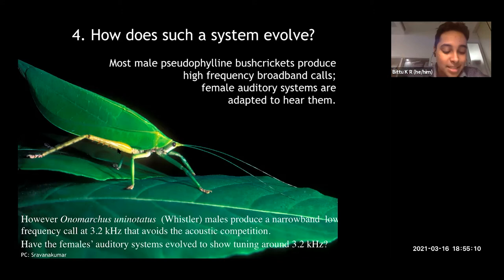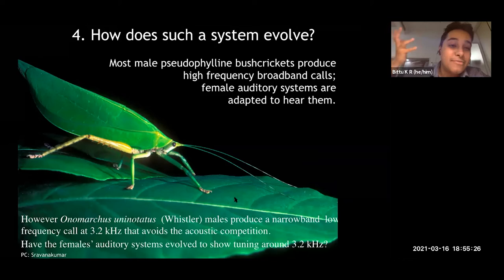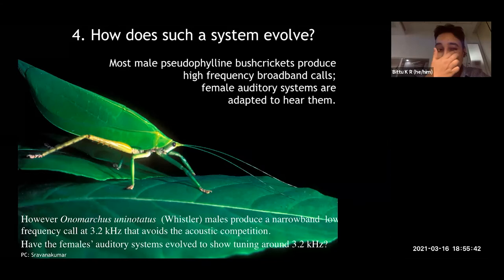Our interest was in looking at the hearing system because there was a hunch that if this is an animal listening to low-frequency sounds but has evolved from a high-frequency lineage, there might be interesting adaptations to examine — how the auditory system has evolved in concert with the call production system. These animals produce a narrowband, low-frequency call — such a low frequency that it actually avoids all the acoustic competition in the forest. It goes from being a very high-frequency caller to being one of the lowest-frequency callers in the forest.